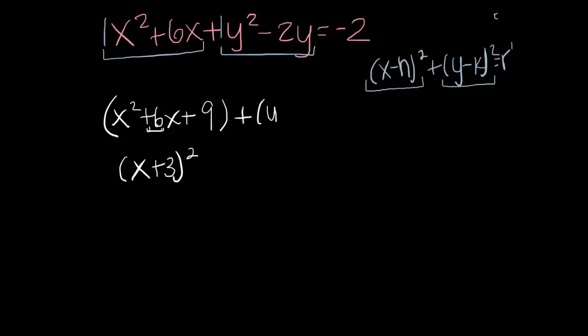Looking good so far. So over here, half of negative 2 is negative 1. Squared is 1. And when I factor that, I get y minus 1 quantity squared.